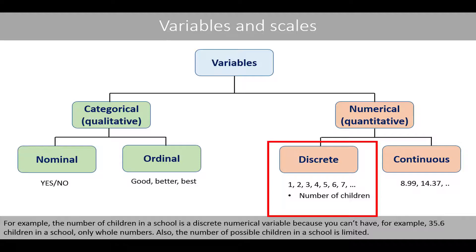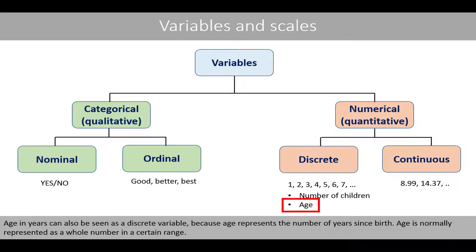Also, the number of possible children in a school is limited. Age in years can also be seen as a discrete variable because age represents the number of years since birth. Age is normally represented as a whole number in a certain range.